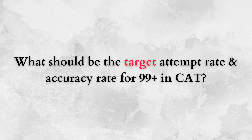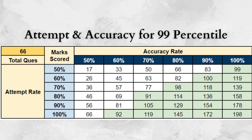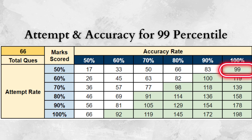Let me suggest what should be a good target for attempt rate and accuracy rate. I will explain this with a CAT 2021 example. In last year's CAT exam, to score 99 percentile you would have required 98 marks. If you look at the attempt rate on the left-hand side in rows and the accuracy rate in columns on top — assuming 3 marks for every correct answer and 1 mark deducted for every wrong answer — you could do it many ways. For example, 100% attempt rate with 60% accuracy, or 50% attempt rate with 100% accuracy. But 100% accuracy is hard, and attempting all questions is also difficult.